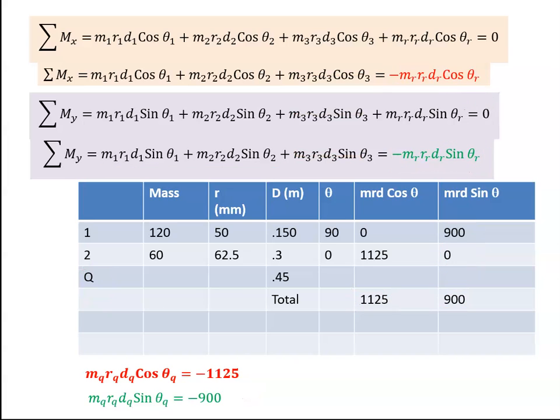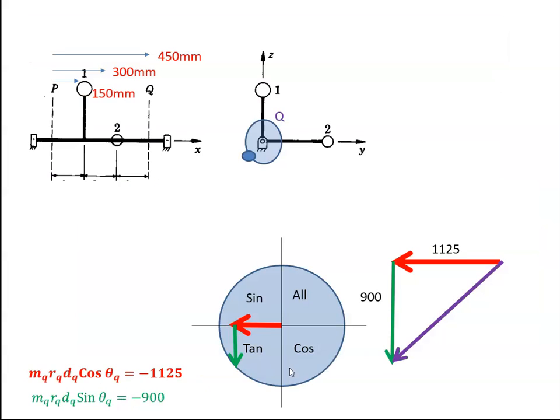Alright, so I hope that makes sense. So the horizontal was a minus number, so the only place in the circle where we have a cosine that's minus and a sine minus is down here. So that is our resultant at position Q. So here it is drawn out a little larger. If we want to get the angle then it's inverse tan of 900 over 1125 which is 38.65, which would be just this angle here.